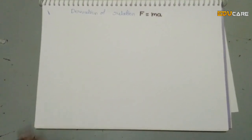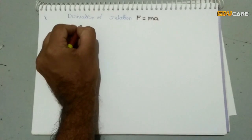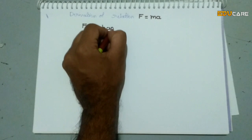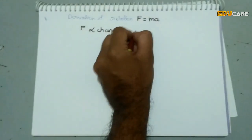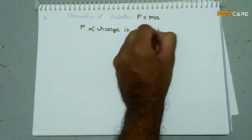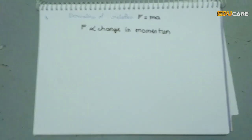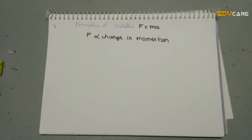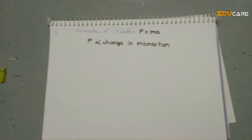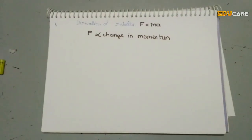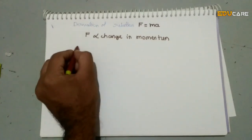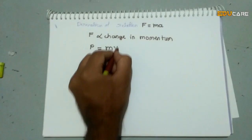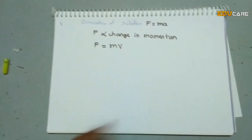The external force is directly proportional to the change in momentum. The change in momentum is given by p is equal to m into v, where m is mass and v is velocity.